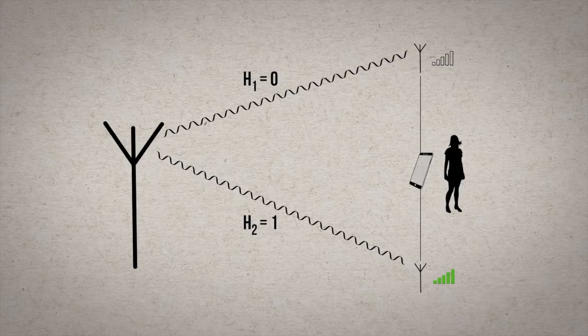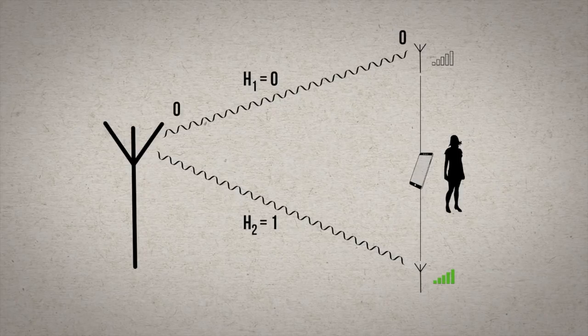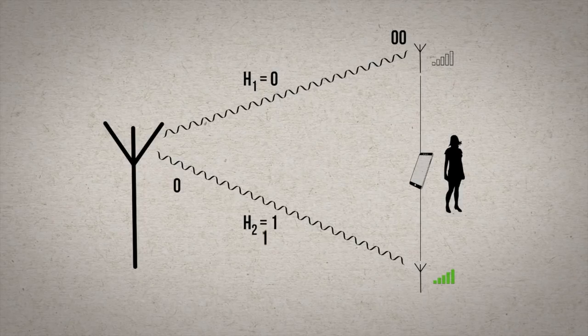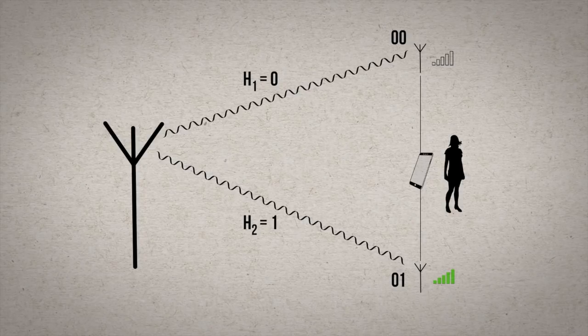So for example, if we are sending a 2-bit message, 0-1, each receiving antenna will measure the original signal multiplied by the fading characteristic. Receiver 1 will measure 0-0. Receiver 2 will measure 0-1. And so if one of the channels has a non-zero fading characteristic, in this case receiver two, then we can recover the data.